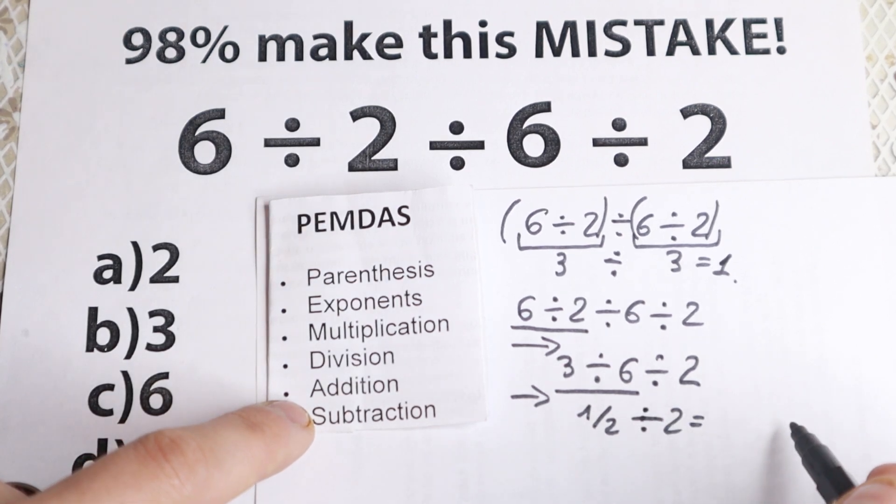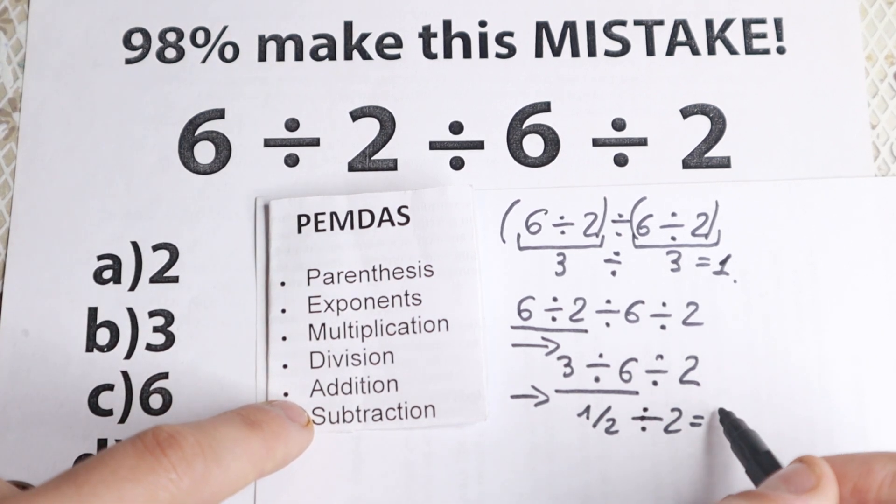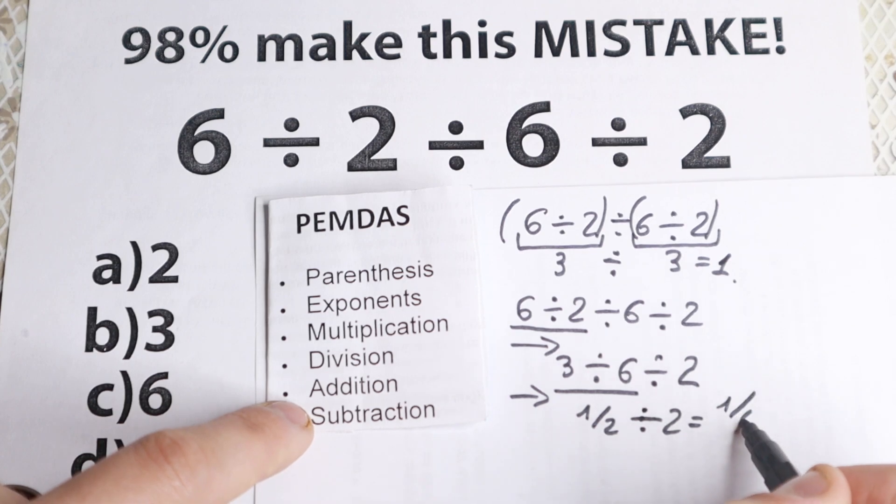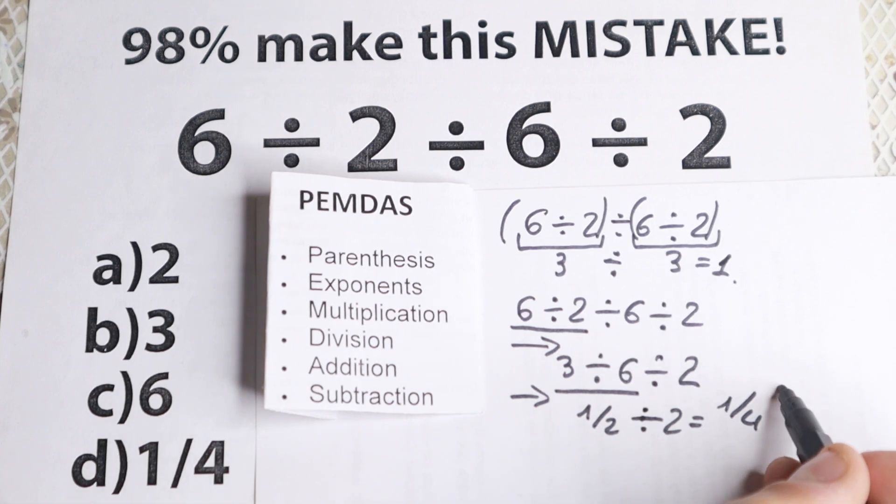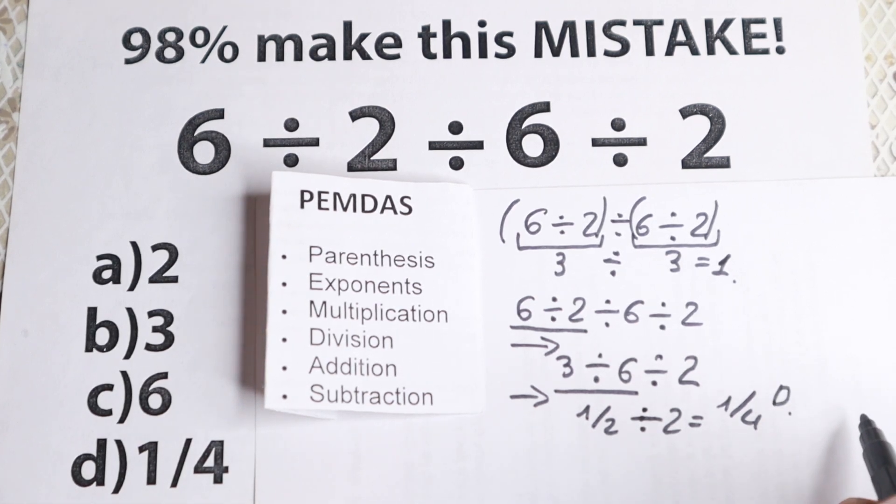And as a result, 1 half divided by 2, this is equal to 1 over 4. And we have this option right here. We have this option, option D.